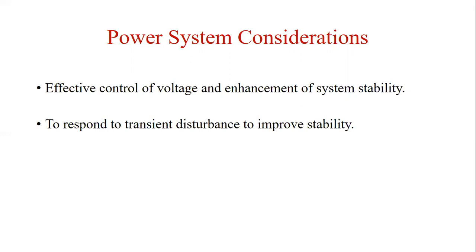Early excitation systems were controlled manually to maintain the desired generator terminal voltage and reactive power loading. When voltage control was first automated, it was very slow, basically filling the role of an alert operator. In the early 1920s, the potential of enhancing small signal and transient stability through use of continuous and fast-acting regulators was recognized. Greater interest in the design of excitation systems developed and exciters and voltage regulators with faster response were soon introduced to the industry.